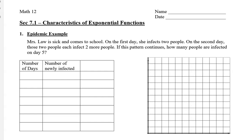Let's say that I, Mrs. Law, am sick and I come to school. On the first day I infect two people. On the second day those two people each infect two more people. If this pattern continues, how many people are infected on day five?